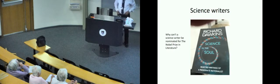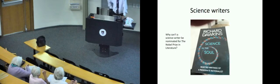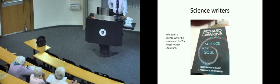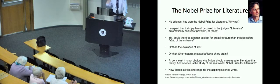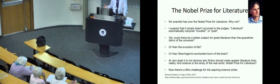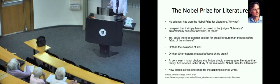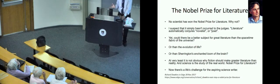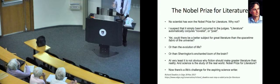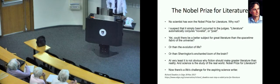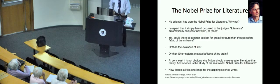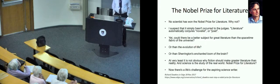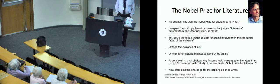Richard Dawkins has to have the last word. He's just written a book called Science in the Soul. He asked, why can't a science writer be nominated for the Nobel Prize in literature? For God's sake, they gave it to Bob Dylan. Why not? He says no scientist has won the Nobel Prize for literature. Could there be a better subject for great literature than the space-time fabric of the universe? Or than the evolution of life? Or Sherrington's enchanted loom of the brain? It is not obvious why fiction should make greater literature than reality. Science is the study of the real world.